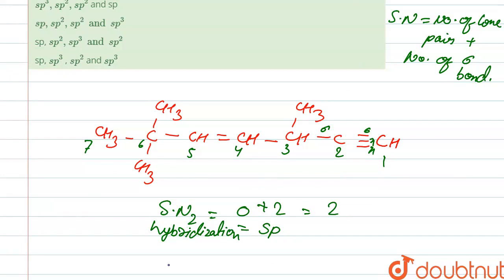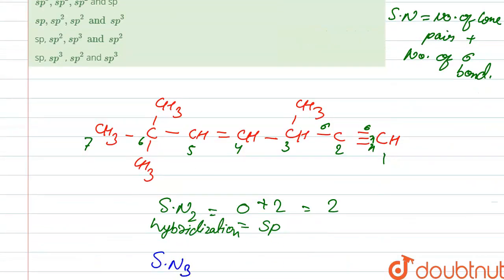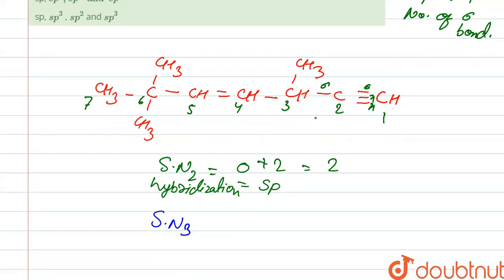Next, steric number for carbon three: one sigma bond here, one sigma bond here, one sigma bond here, and also in the CH there is one sigma bond. So there are total four sigma bonds. Zero plus four — steric number is four. So its hybridization is sp3 hybridization.